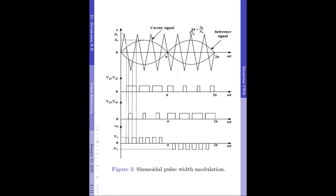Moving on, the ratio of the reference signal amplitude AR to the carrier signal amplitude AC is called the modulation index, and this acts as a control variable. The value of the modulation index M can vary from 0 to 1 and it controls the width of the gate drive pulses generated. Smaller the modulation index — meaning the value of the reference signal amplitude is small — smaller will be the widths of the gate pulses generated. As the value of M increases, which happens when the reference signal amplitude increases, the pulse widths will start to increase. As these pulses are used to drive the transistors of the full bridge inverter, the output of the inverter will accordingly vary, and that is how we control the inverter output.